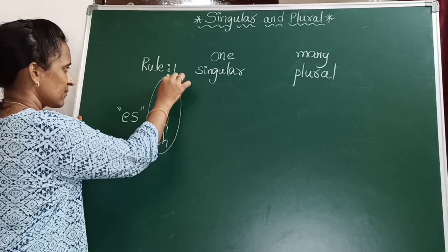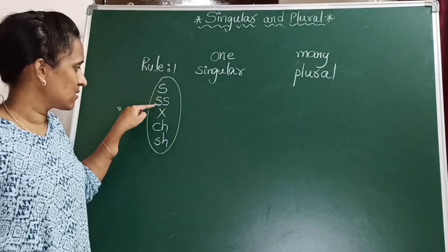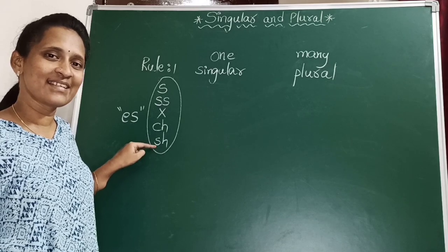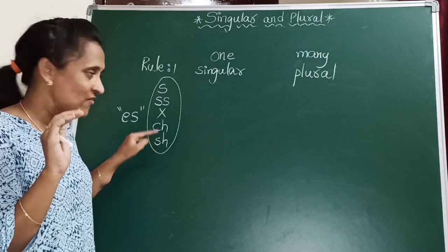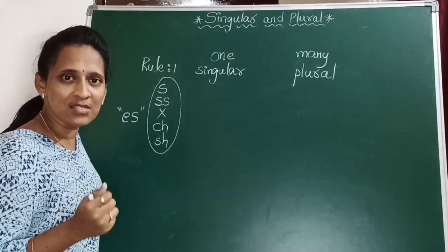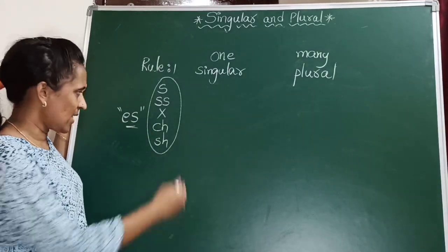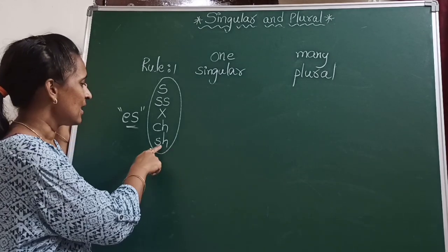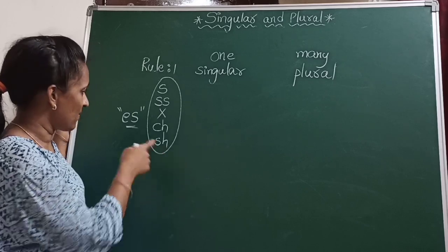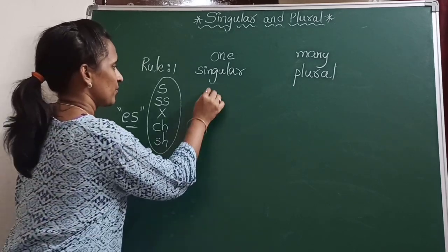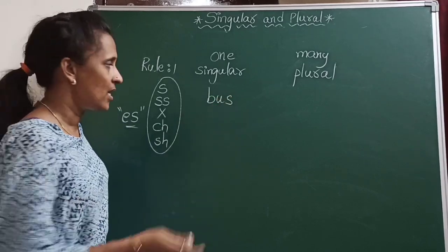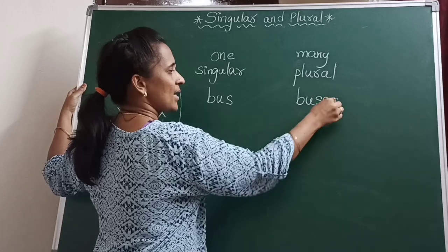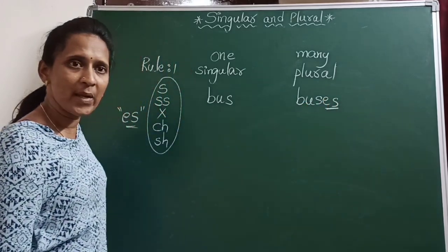Look at these letters, children — S, SS, SH. What sounds can you hear? The sounds that a snake would make, right? The snake makes these sounds. If the word is ending with these sounds, you can blindly add ES. If you are unable to remember all these letters, just remember the sounds and add ES to that word. For example, bus — it ends with S sound — so you add ES after the word to make it plural: buses.